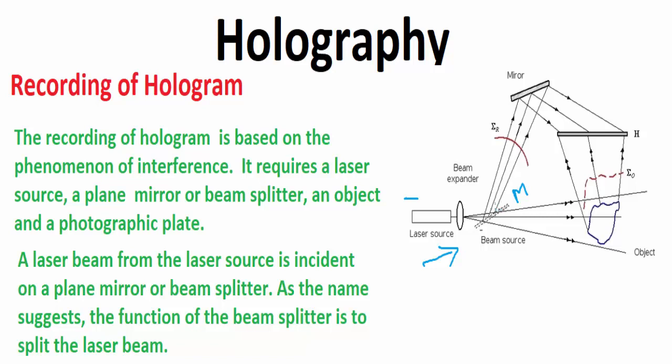The second one is transmitted through the mirror straight to the photographic plate or photo plate. In this way, the laser beam produces two beams, namely an object beam and the other one is a reference beam.